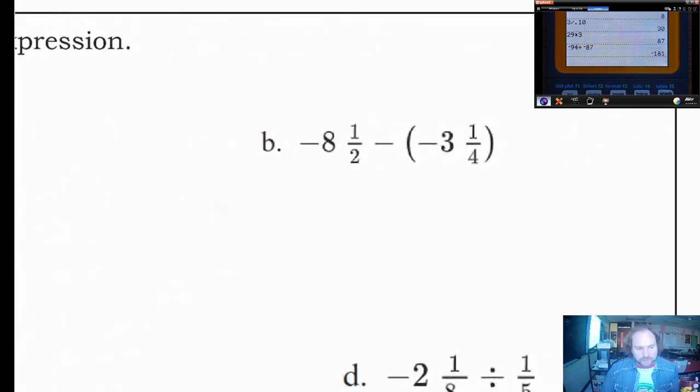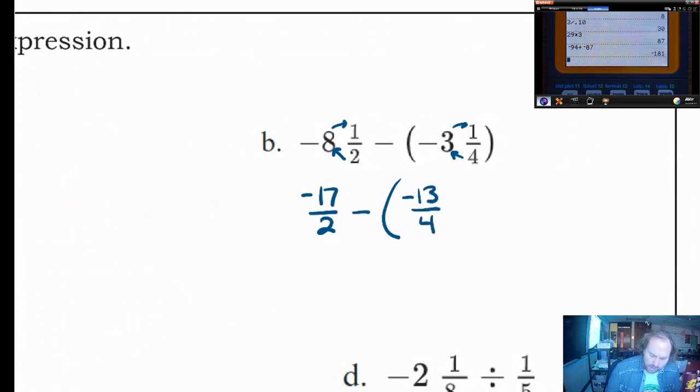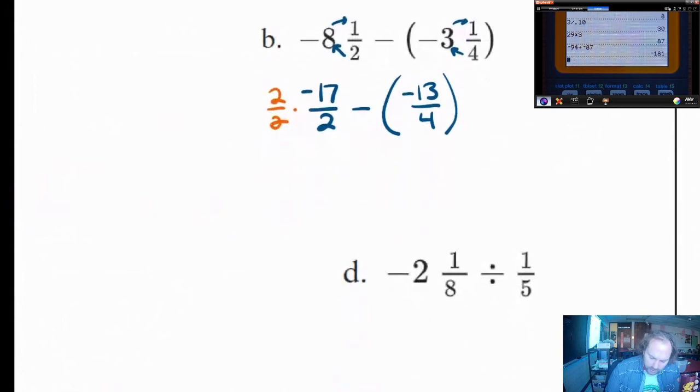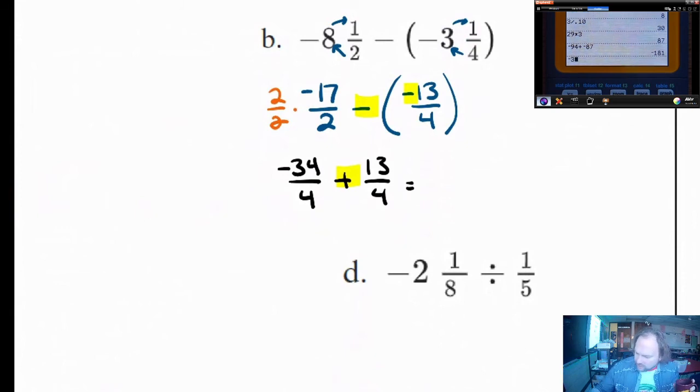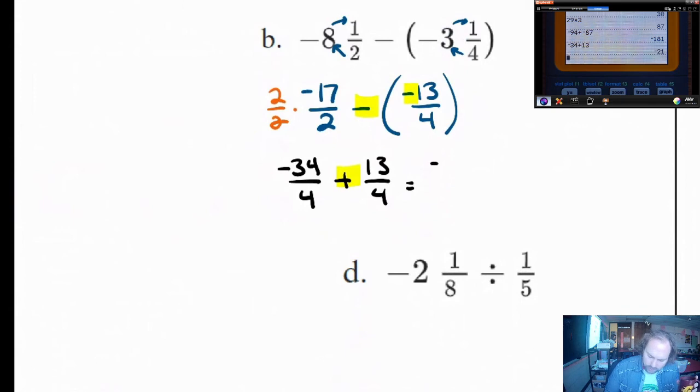Question B is going to be, this is the kind of question I think I would prefer. I think this will be a little simpler to work with. 2 times 8 is 16. 16 plus 1 is 17 over 2. Minus, in the parentheses, 4 times 3 is 12. 12 plus 1 is 13. Negative 13 over 4. We'll change that to a plus in the next step. We should also convert this fraction. Let's multiply everything by 2 over here to make its denominator also 4. We'll have negative 34 over 4 plus 13 over 4. Changing that minus negative into a plus right there. And all we've got to do now is add negative 34 plus 13. I'm going to use a calculator, but don't judge me. Negative 21 over 4 is a better answer.